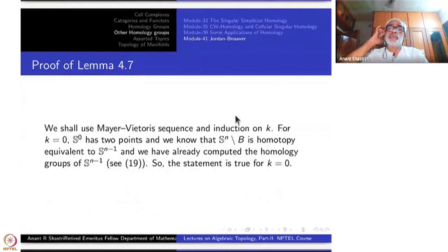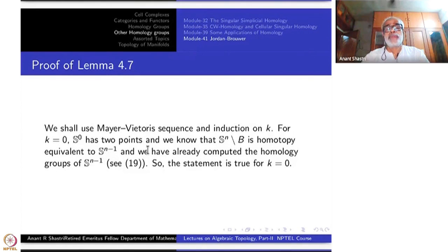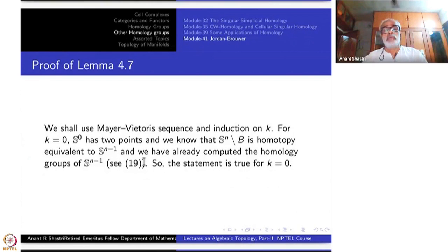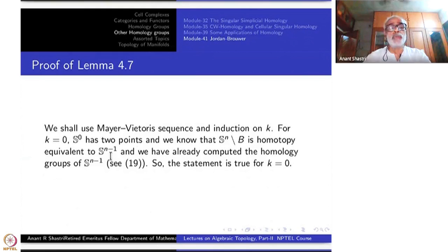We use Mayer-Vietoris sequence and apply induction on K. For K equal to 0, S^0 has two points, and S^n minus these two points is homotopy equivalent to S^(n-1). Removing one point gives something homotopy equivalent to a disk; removing two points gives a strong deformation retract to S^(n-1). We have already computed the homology of S^(n-1), so the statement is true for K equal to 0.